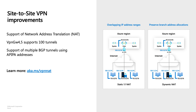Network Address Translation (NAT) is designed to address the address overlapping problem between your network and Azure. NAT is a fairly mature technology. What I want to call out is that our NAT has two configuration options: static NAT and dynamic NAT.